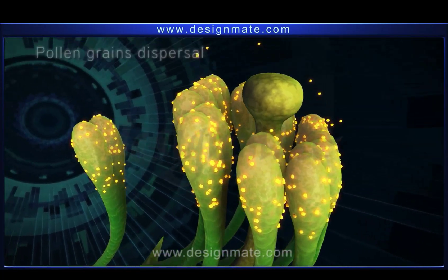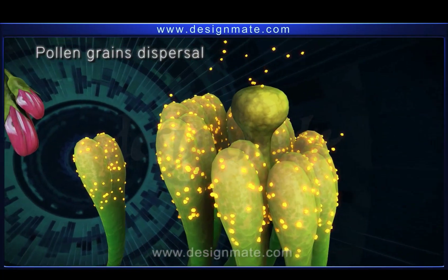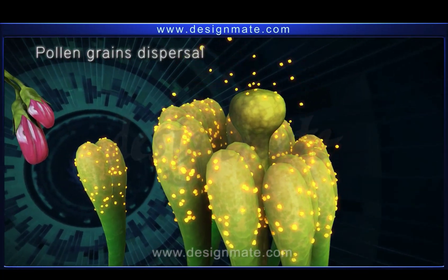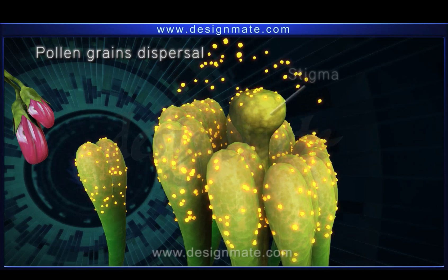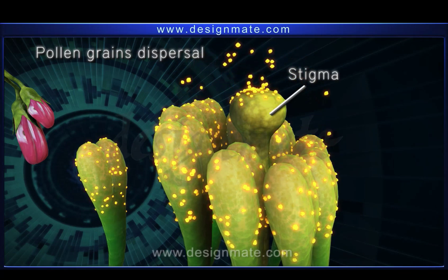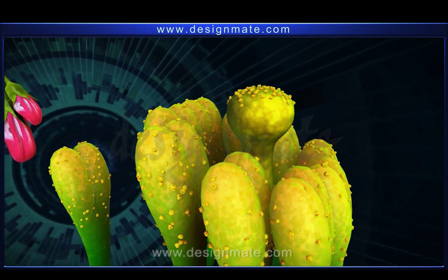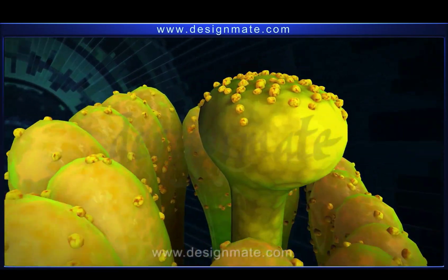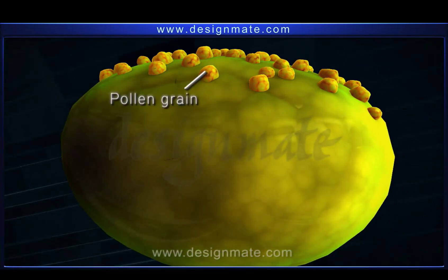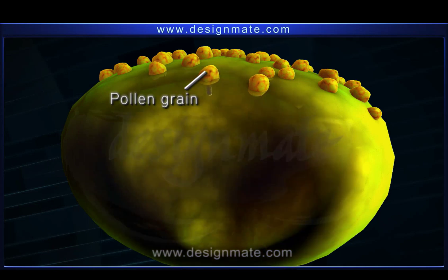The pollen grains, after dispersal from the anthers, are carried to the stigma of the gynecium. Once the pollen grains are deposited on the stigma, they start growing tubes called pollen tubes.